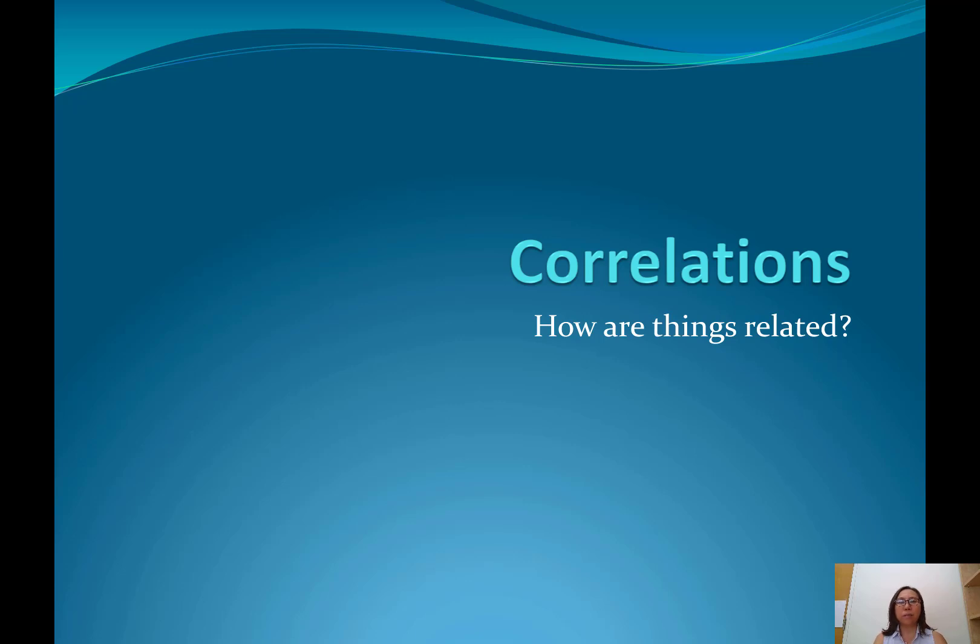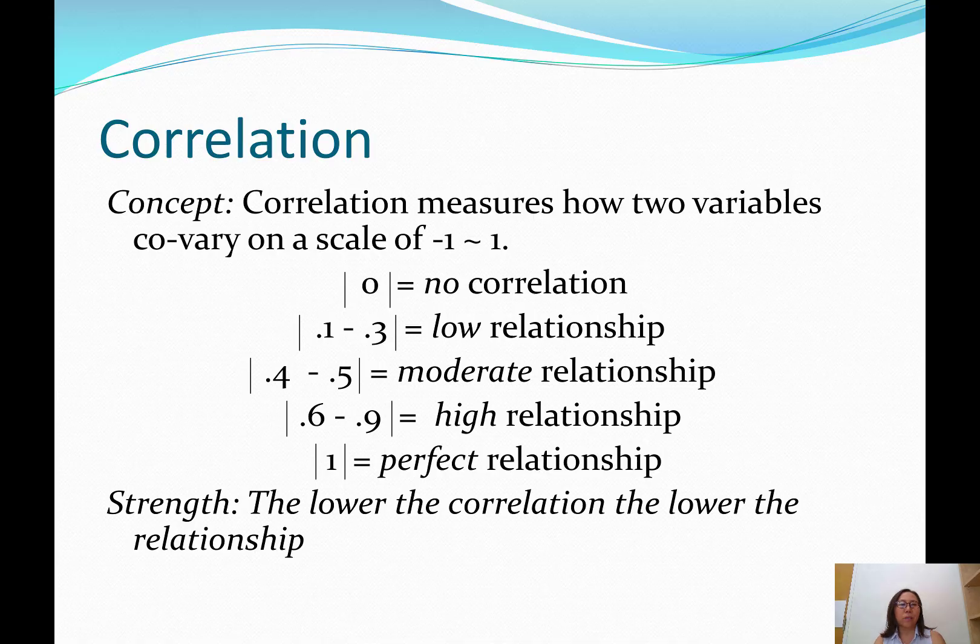Correlations is a tool to measure how two variables are related to each other. The concept of correlations is to quantitatively measure the relationship or how two variables co-vary. We measure this on a scale of minus 1 to 1, with positive and negative numbers. We'll talk about the direction, positive or negative, of the correlation coefficient in the next slide.